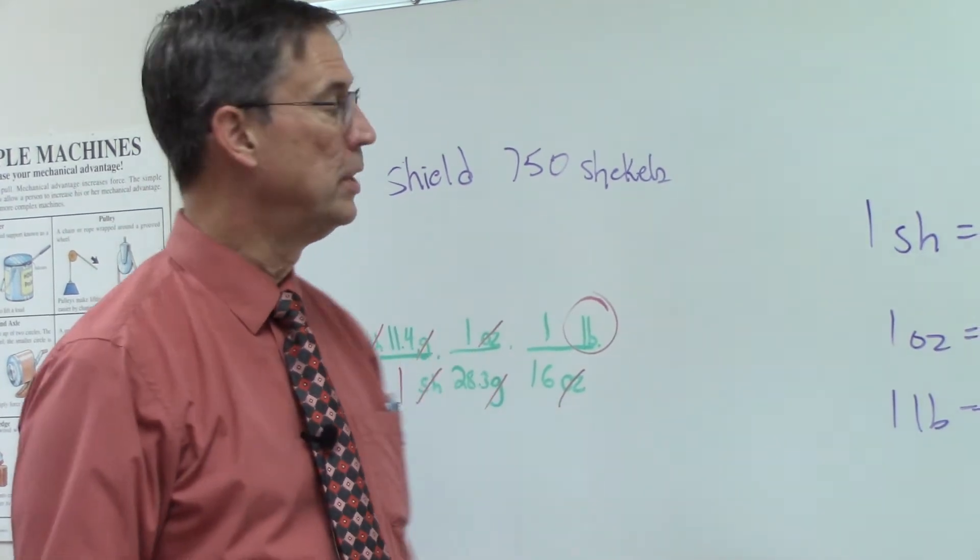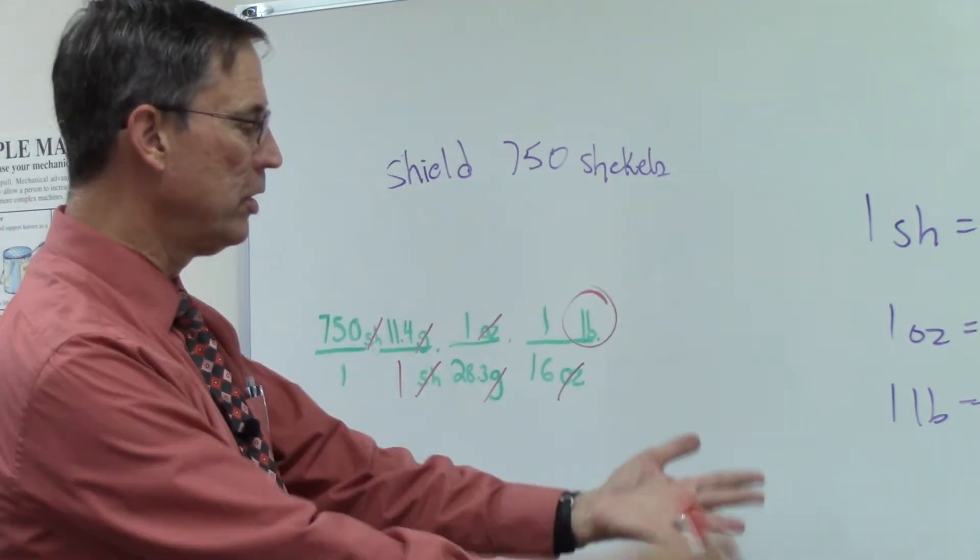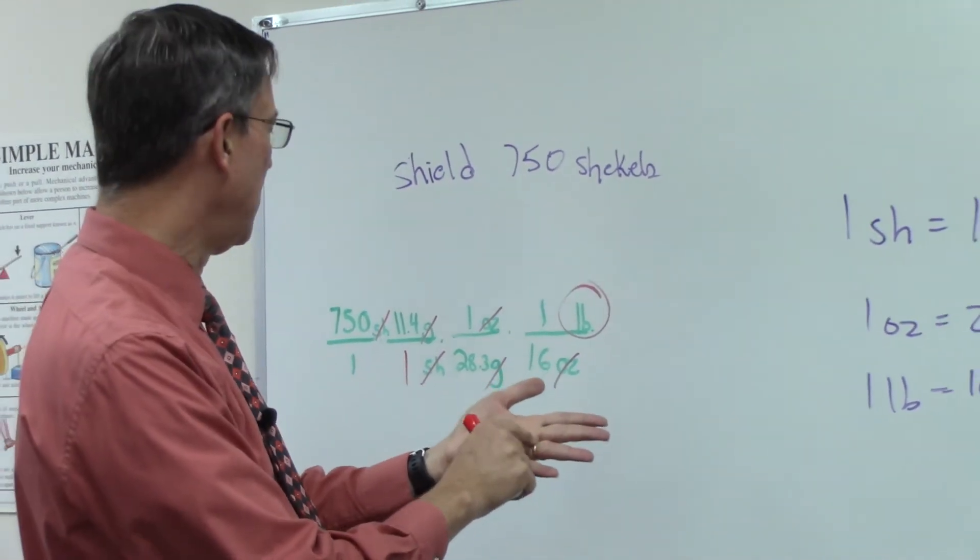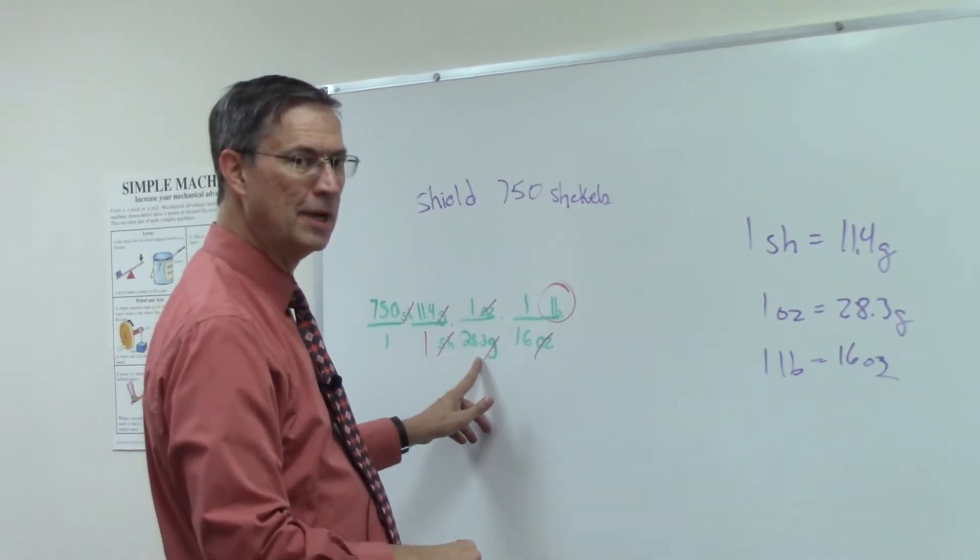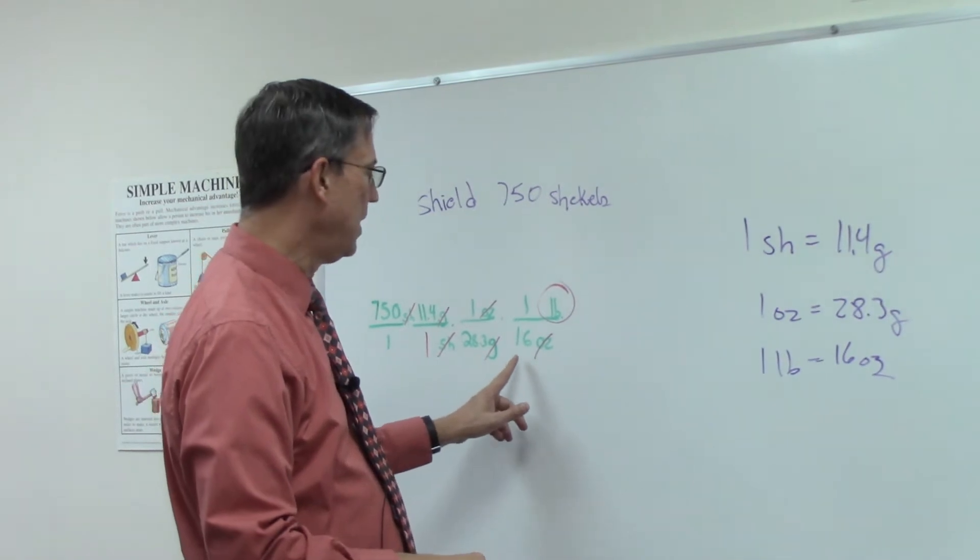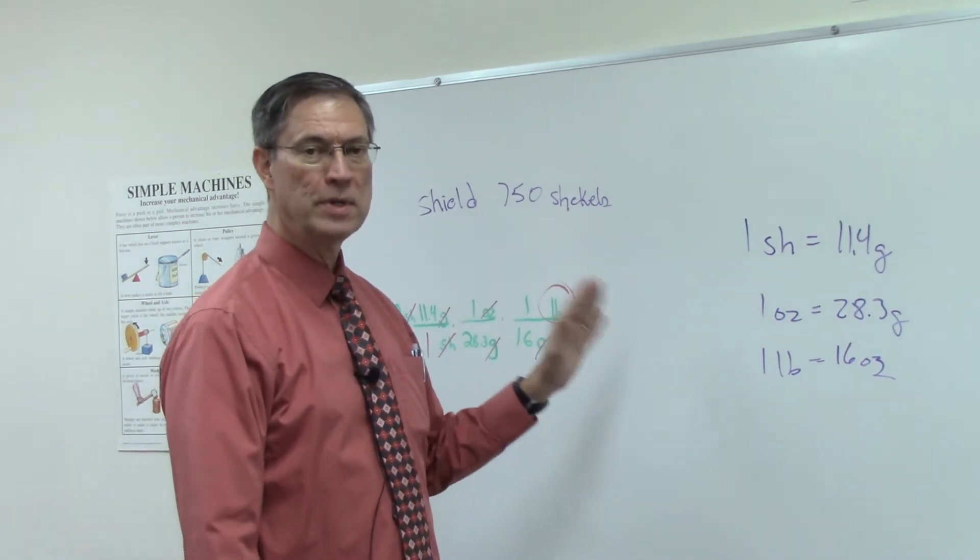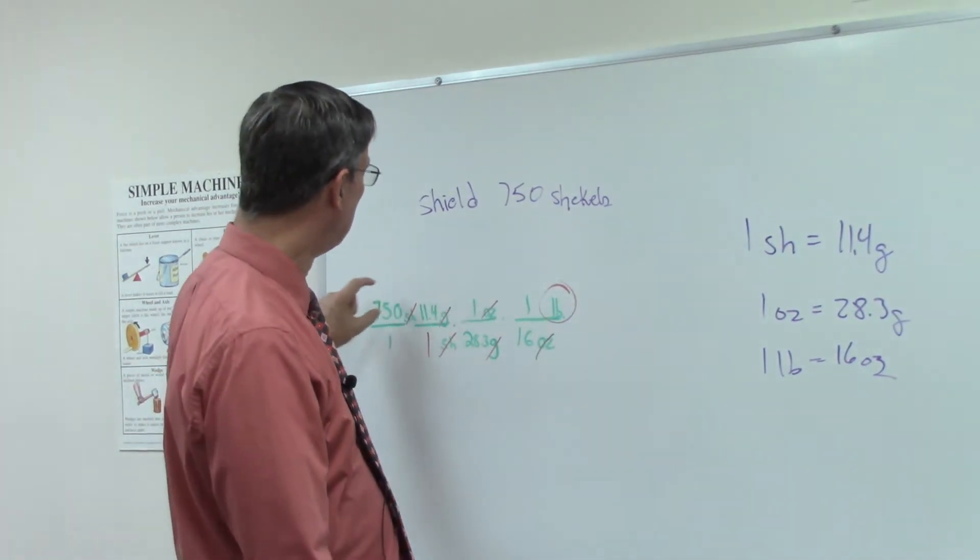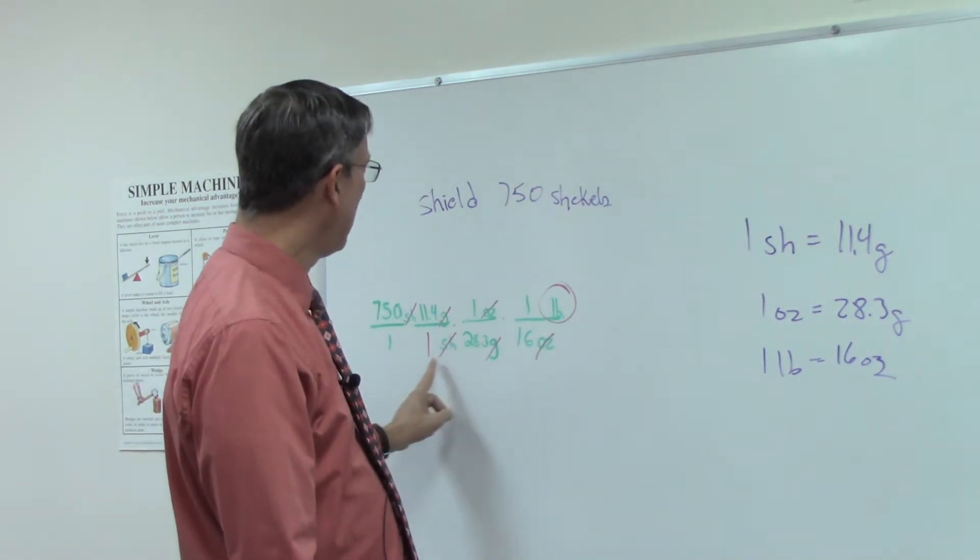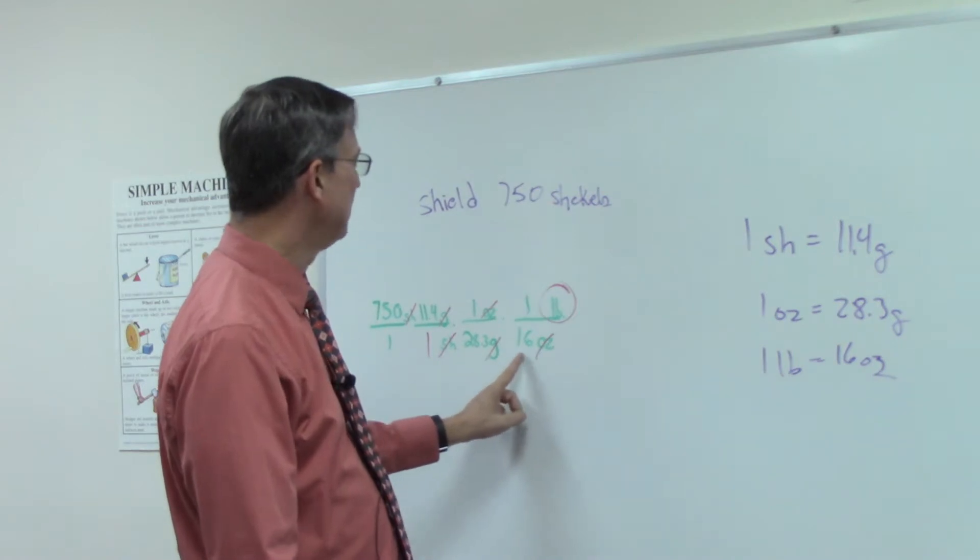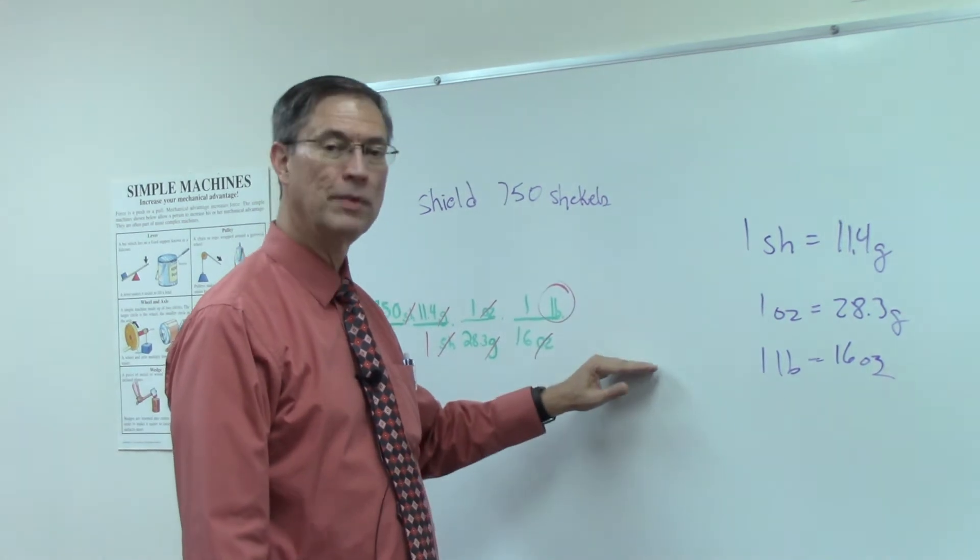I would encourage you to use a calculator to do the math on these, but let me just give you one quick clue. If you punch in 750 times 11.4 divided by 28.3 and then you hit times 16, you're going to get it wrong. The surefire way to always get these right is multiply all the top together, write the number down, multiply all the bottom numbers together, write that number down, and then as your last step, take the top number divided by the bottom.